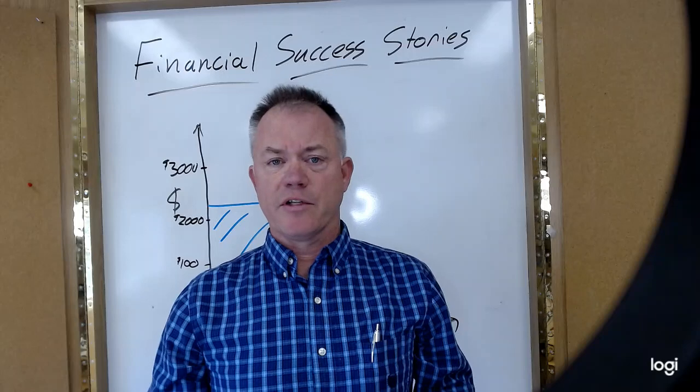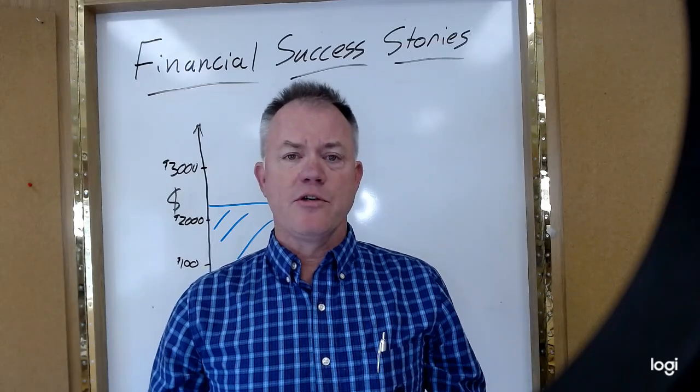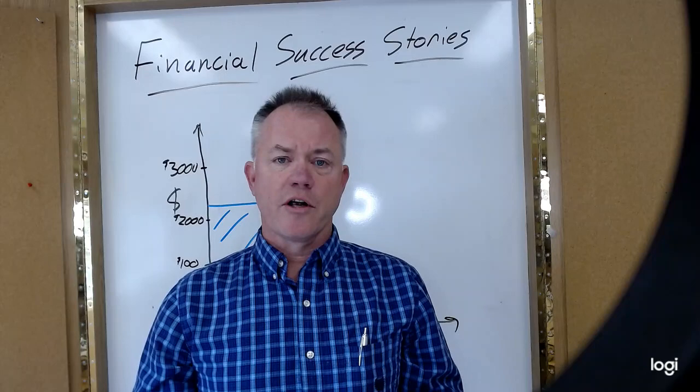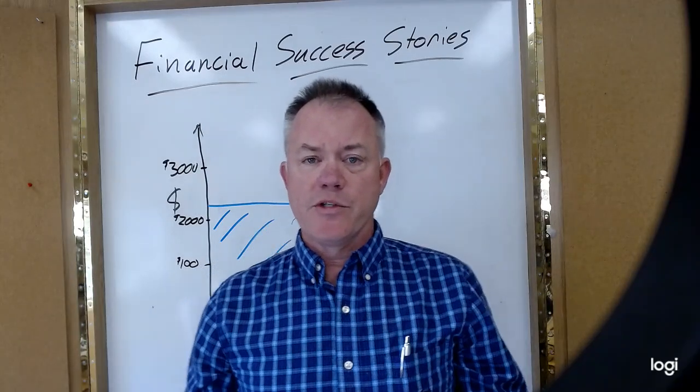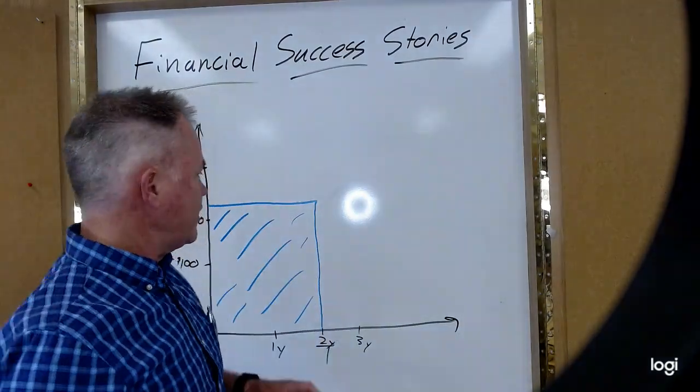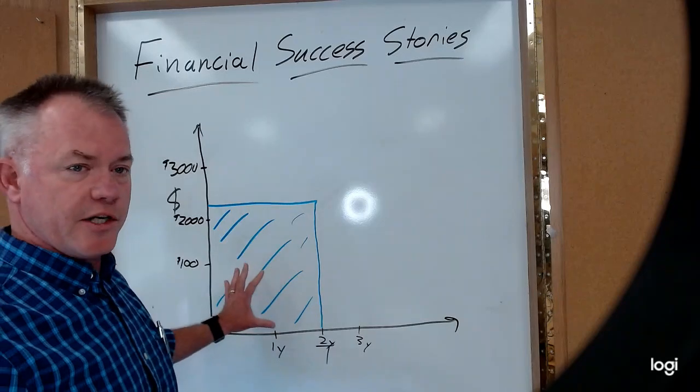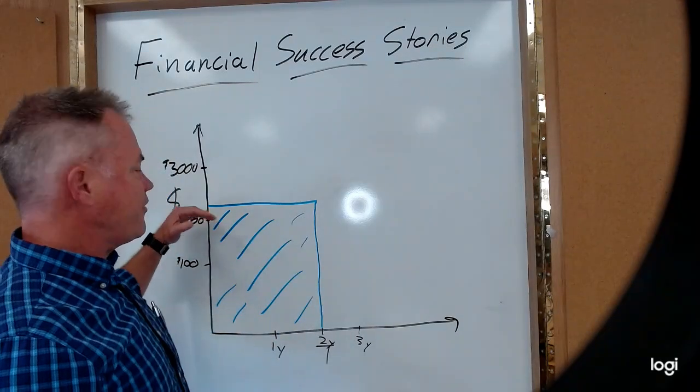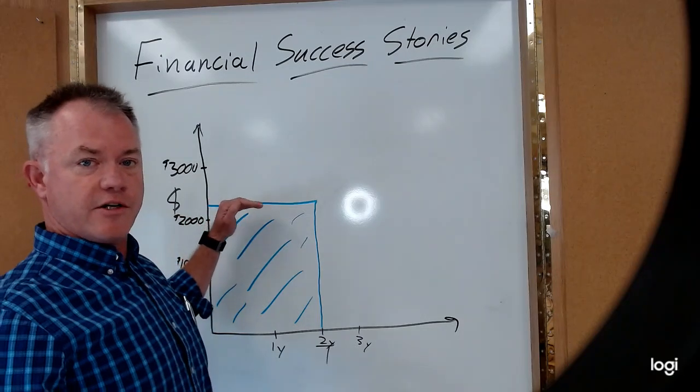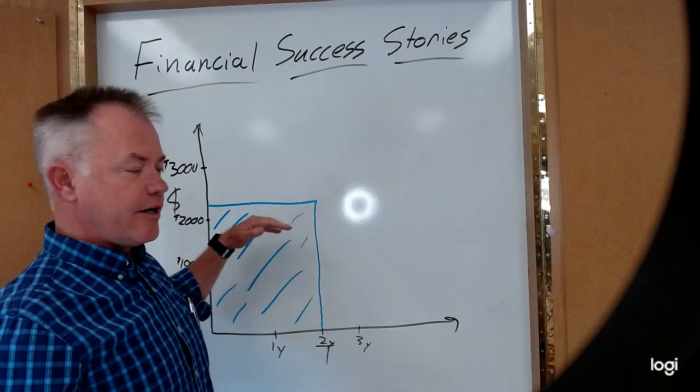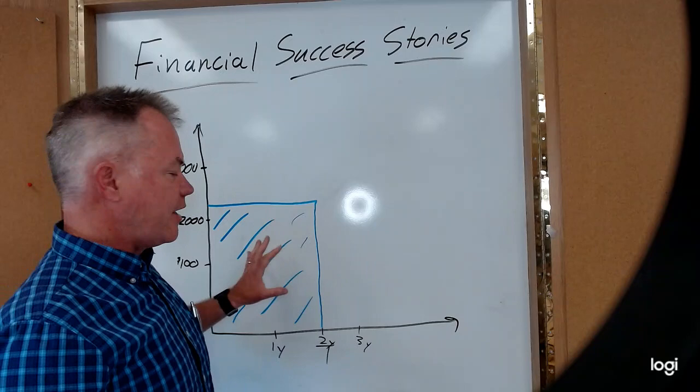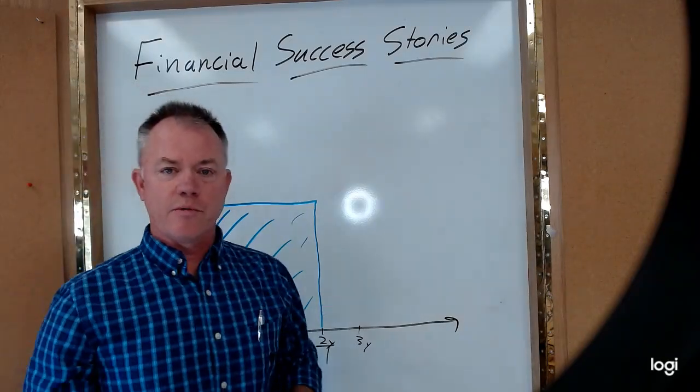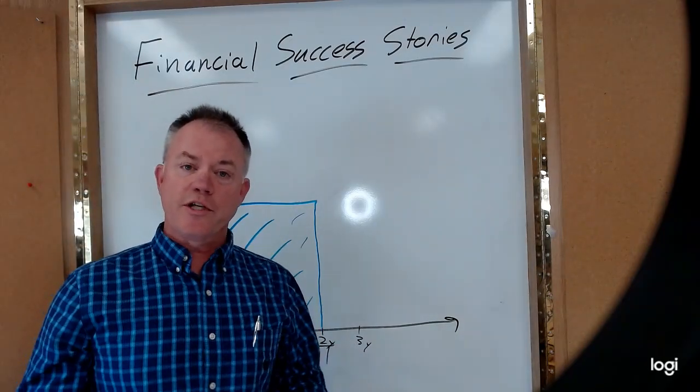So she was able to use her disability through work, which was great. But what was interesting was that the disability, the blue box here shows her group plan. And she qualified for $2,200 after tax, or tax-free under the plan for a period of two years in what was called own occupation, which was really good.